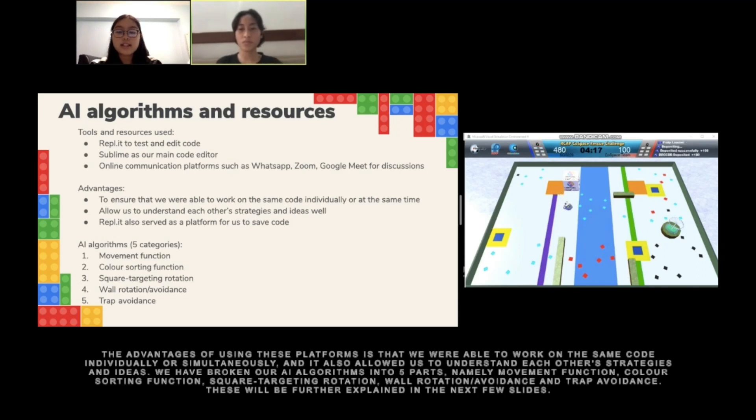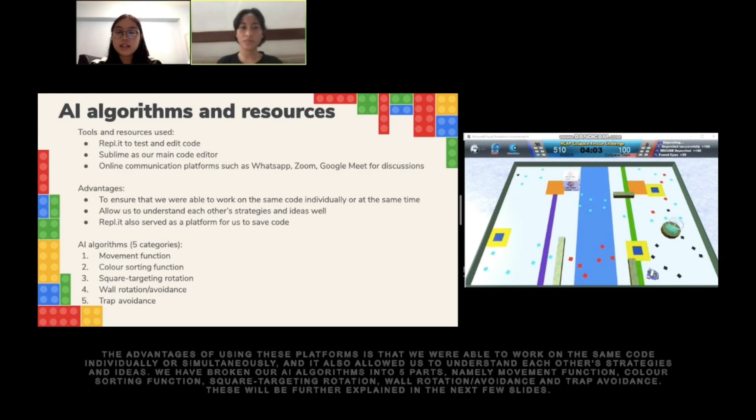We have broken our AI algorithm into five parts, namely movement function, color sorting function, square targeting rotation, wall rotation or avoidance, and trap avoidance. These will be further explained in the next few slides.